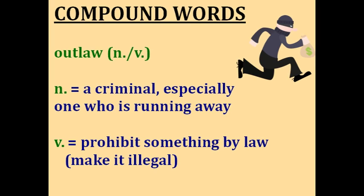Outlaw. The word outlaw has two different meanings — it can be a noun or a verb. As a noun, a person who is an outlaw is a criminal, usually one who is running away from the police and trying to avoid being captured. As a verb, outlaw means to prohibit something by law. For example, if your country outlaws talking on your cell phone while driving, it means that action is now illegal and you will be punished if you do it. So we have outlaw the person, who is a criminal, and outlaw the action — to make something illegal by law.